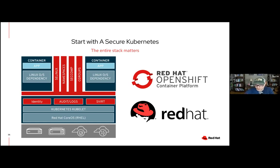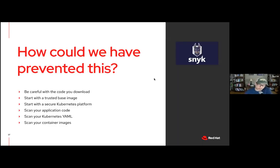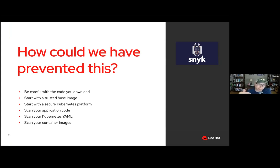Start with the best trusted base image, start with a trusted Kubernetes platform, don't disable security defaults, and verify everything. Snyk and Red Hat are a good partnership — once you've carefully downloaded code, you scan it to double-check: scan the Kubernetes YAML, scan the container images. But you can't scan your way out of bad quality — you can catch and remediate issues, but it might already be too late. Always try to start from a good place and then verify.